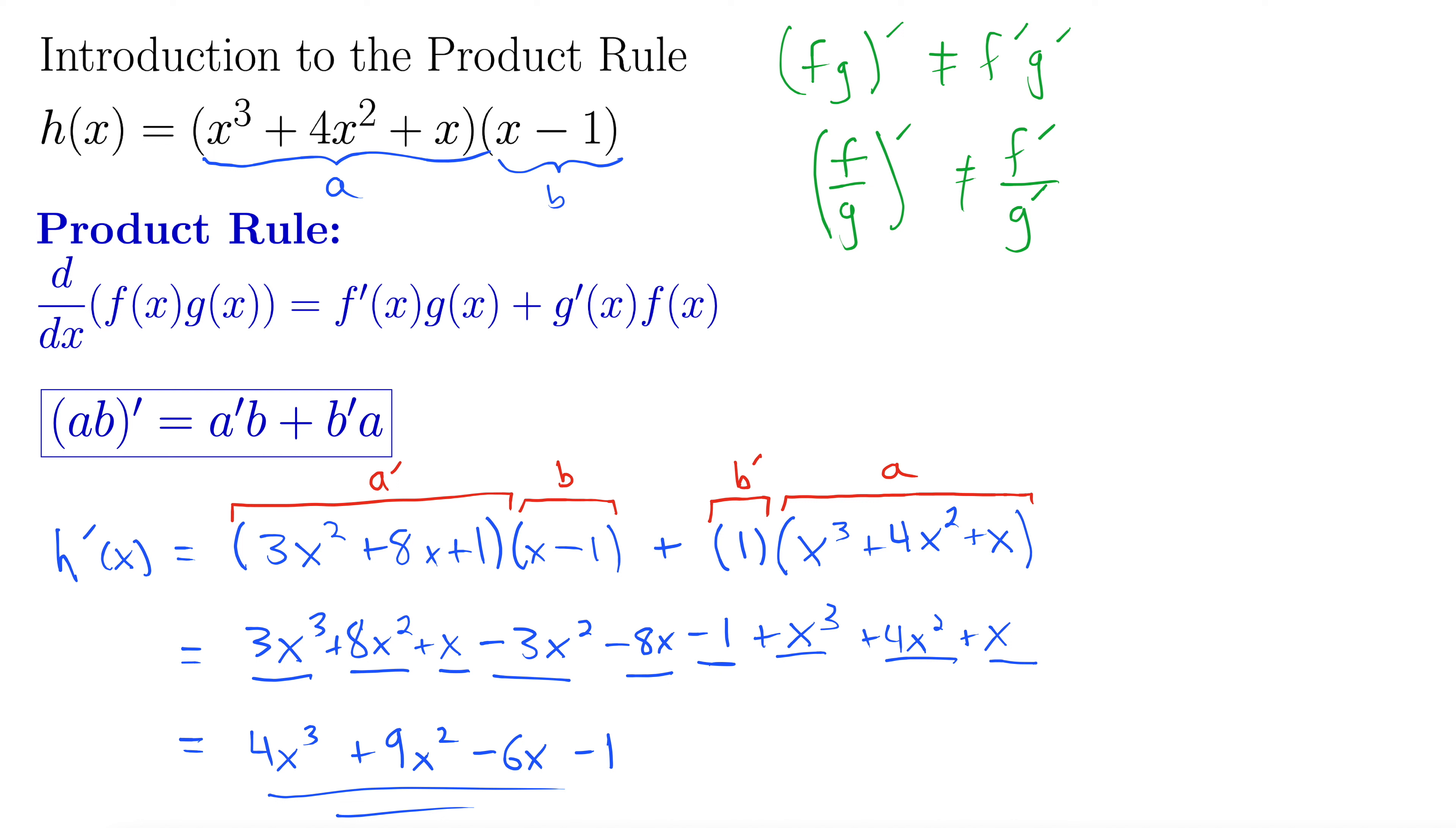Okay, there's no more simplification. So that is the derivative. And I recommend on your own as an exercise to multiply this h(x) out first. We could do that. We don't need the product rule here. So take this h(x), multiply that out, and then just take the regular derivative of it and see if you get the same thing.